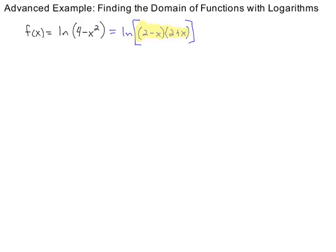So, the first thing we're going to do is figure out where the argument equals 0. So, when you multiply two things to get 0, one of those two things has to be 0. In other words, 2 minus x has to be 0, or 2 plus x has to be 0.